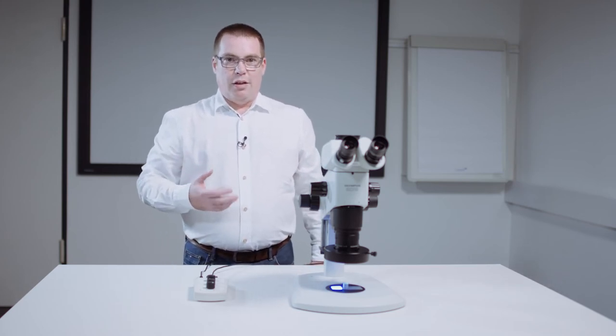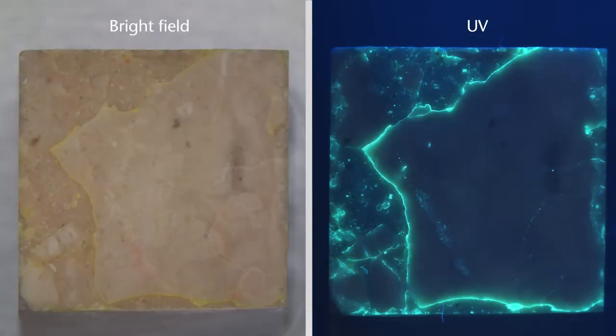Cracks are made visible by using UV light to make fluorescent dyes that have drawn into the cracks by capillary action visible, as shown here on a concrete sample.